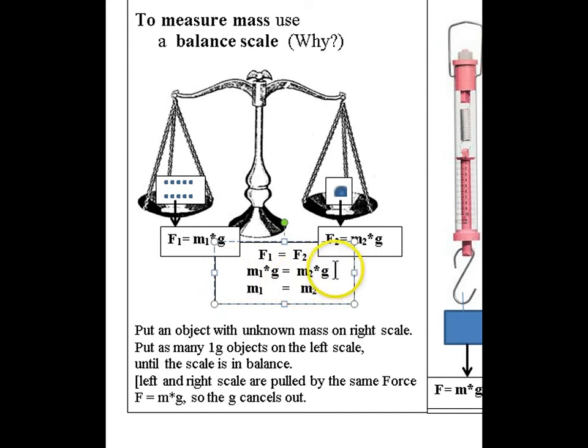Now if F1 equals F2 you have M1 multiplied by g equals M2 multiplied by g and you can divide both sides by g so that M1 equals M2. The g cancels out and now if you take the scale and the object which you want to measure plus the measuring masses on the moon you would get exactly the same masses in equilibrium.